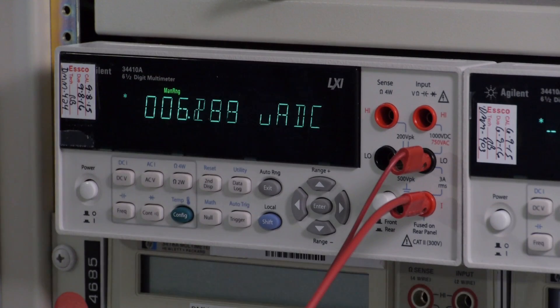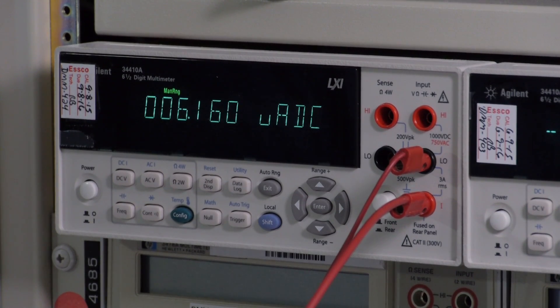As you can see here, the FUSB301 is drawing only 6 micro-amps of current while handling all the Type-C detection and control.